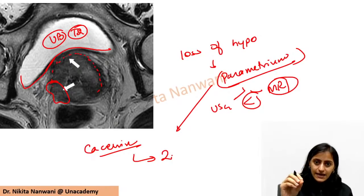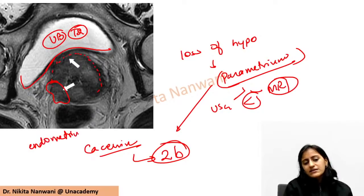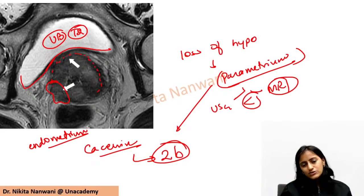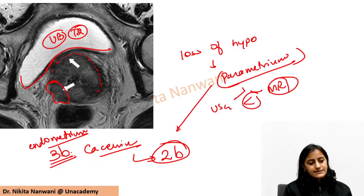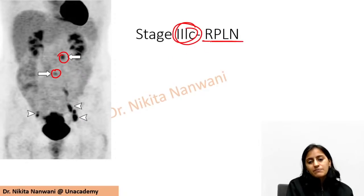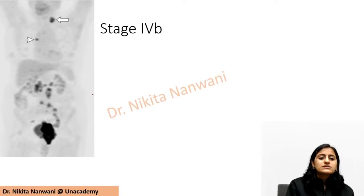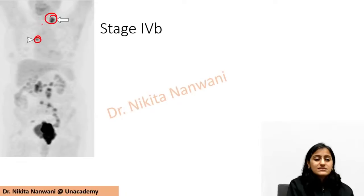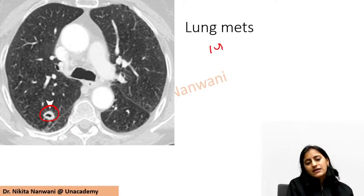In ca cervix: vagina is 'A' and parametrium/pelvic wall is 'B' - so parametrium involvement is stage 2B. If this were ca endometrium, the patient would have gone cervix (stage 2) then parametrium - making it stage 3B. Next image: a PET scan showing retroperitoneal/pelvic lymph nodes - this is stage 3C. Distant involvement including supraclavicular nodes or lung metastasis with a cavitatory lesion would be stage 4B.